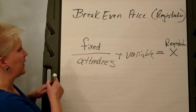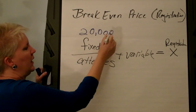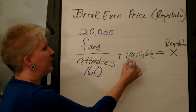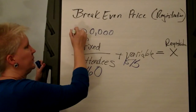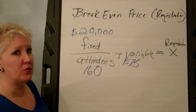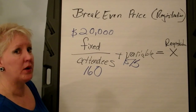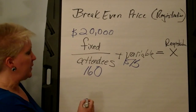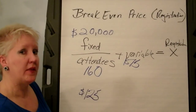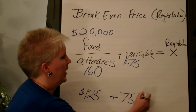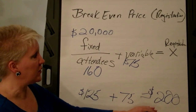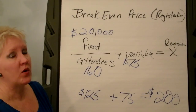To walk you through with some numbers: let's say your fixed cost is $20,000, your number of attendees is going to be 160, and your variable cost is $75. You're going to divide 160 into $20,000 — this tells you how much each person has to pitch in to cover the fixed cost, which comes out to $125. Then you add on the variable cost of $75 for each individual to come, giving you a total registration fee of $200. Your registration fee for this event would have to be $200 to break even.